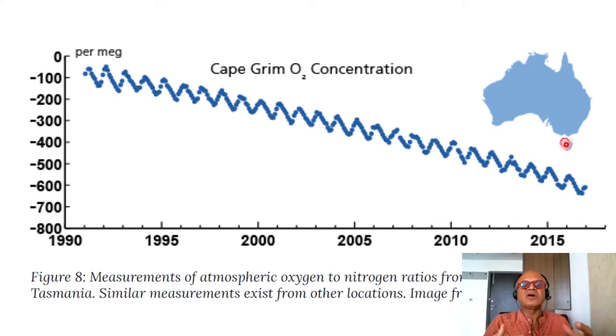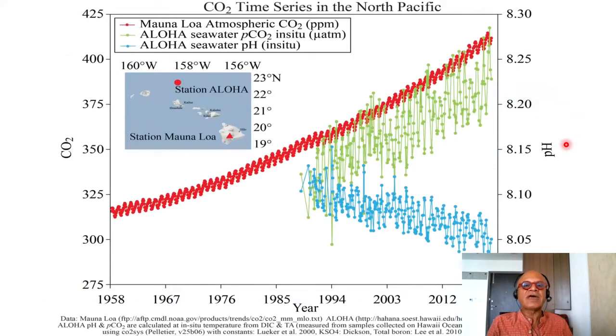Oxygen is not obviously well mixed in terms of concentrations like CO2, so you can measure it in a few places as well. There is also evidence in the ocean for where the CO2 is going. So over near Hawaii, there is also seawater PCO2 and seawater pH that is being measured more recently.